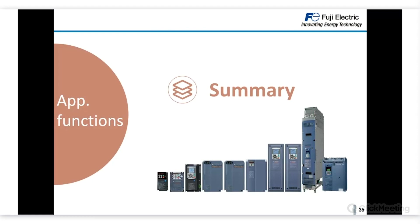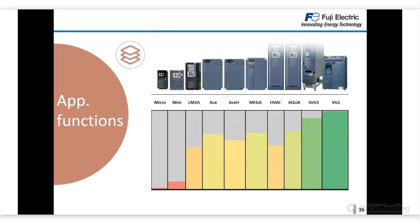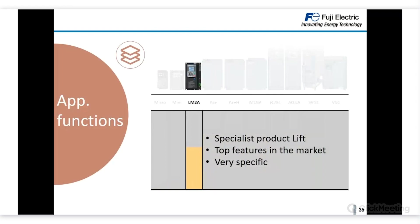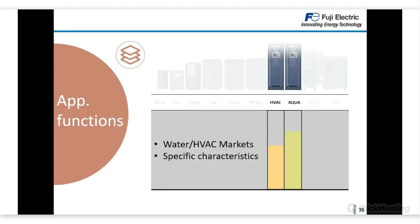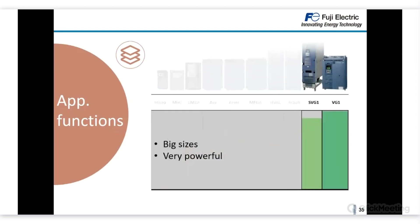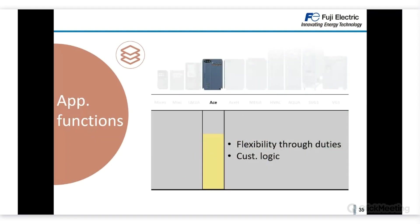As a summary for the application functions category: LM2A is a very powerful inverter with top market features but specific to the lift sector. HVAC and Aqua are specialist products focused on their respective applications with top features. VG1 and VG1 stack are used mainly in large, powerful applications across a wide range of uses. MEGA and ACE add flexibility through their different duties and customizable logic in order to adapt the inverter to specific application characteristics.